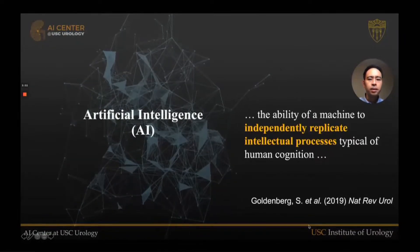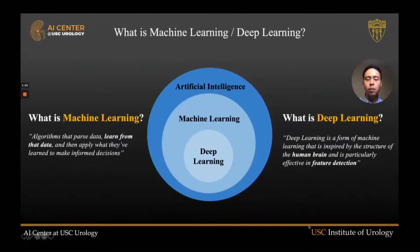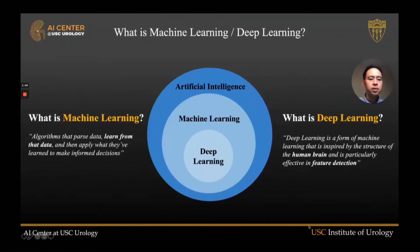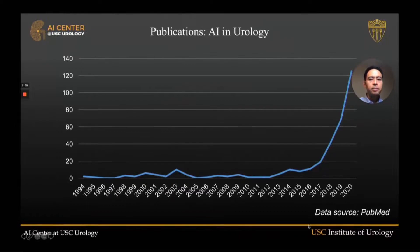Artificial intelligence, or AI, is the ability of a machine to independently replicate the intellectual processes typically seen in human cognition. Machine learning is a subset of AI where computer algorithms can parse through data, learn from the data, and then apply what it has learned to make informed decisions. Deep learning is yet a subset of machine learning where algorithms are inspired by the structure of the human brain with many interconnected neurons which collectively make greater insights. Publications in AI and urology have truly skyrocketed in the last several years.